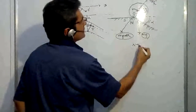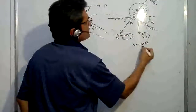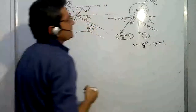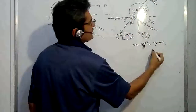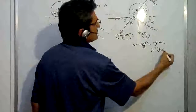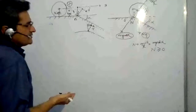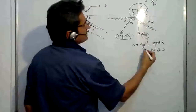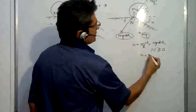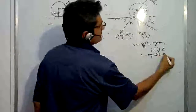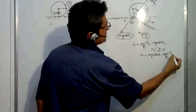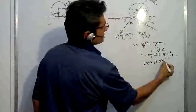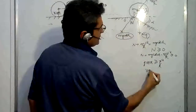Now equate the forces along the plane: N plus m·V_dash²/R is equal to mg·cos(alpha). For the cylinder not to fly off, the normal reaction should always be greater than or equal to zero, because if it flies off N becomes zero and there is no contact. So N = mg·cos(alpha) − m·V_dash²/R ≥ 0.